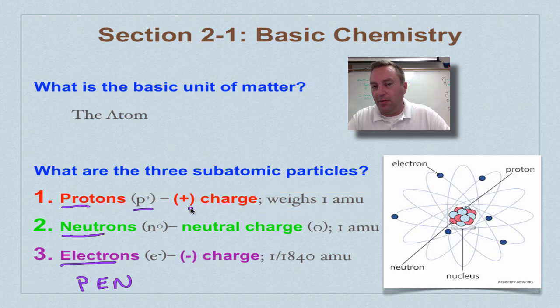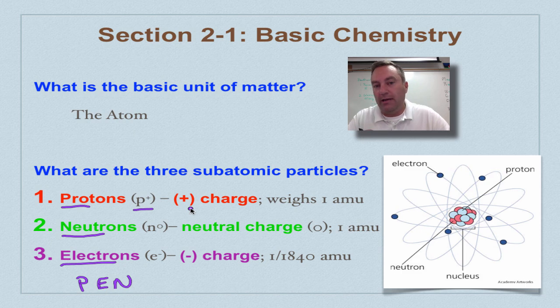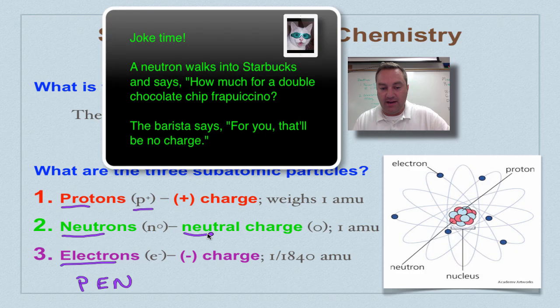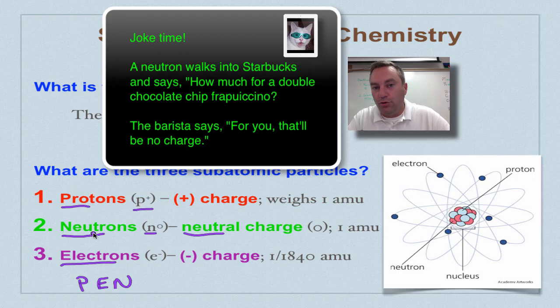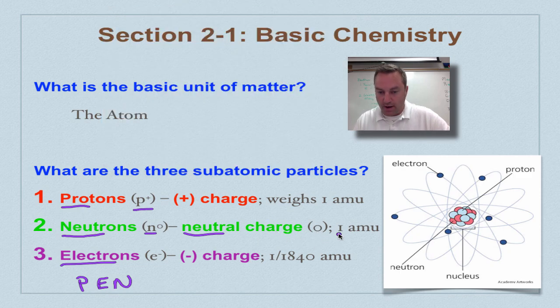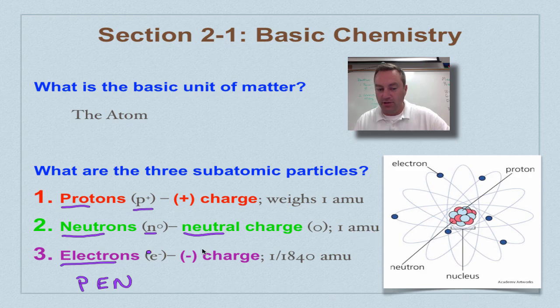These subatomic particles weigh way less than a gram, and that's really too small of a number for us to comprehend. So we created a new metric unit called an atomic mass unit, AMU for short. And protons weigh one of those. Neutrons, N0, these guys have a neutral charge. So look at the first five letters, those are the same five letters in a neutron. They also weigh one atomic mass unit.